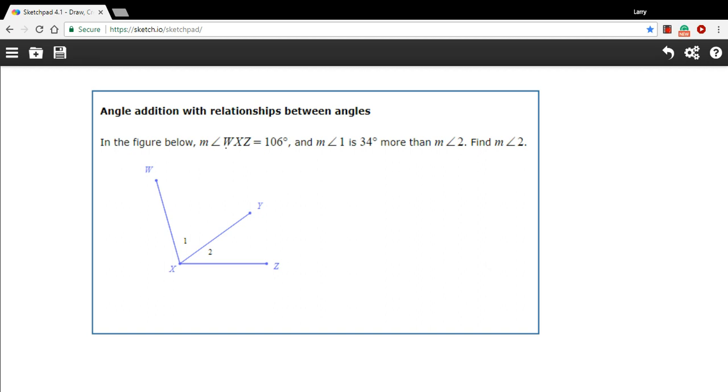It says, in the figure below WXZ, so W to X to Z, so that's the whole thing, equals 106 degrees. The measure of angle 1 is 34 more than the measure of angle 2, and we want to find the measure of angle 2.